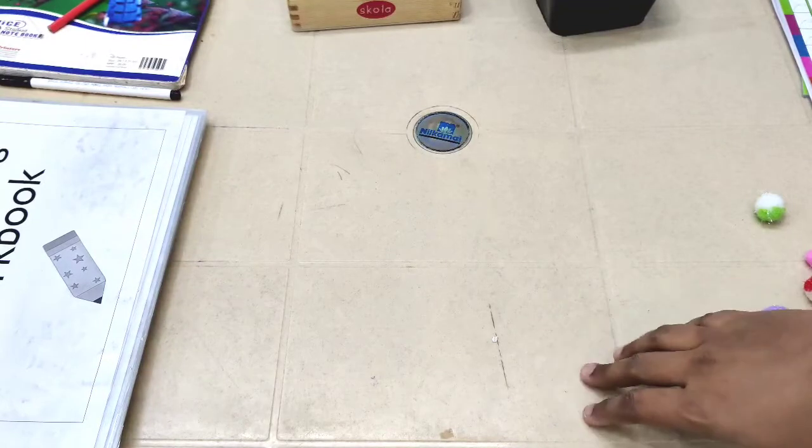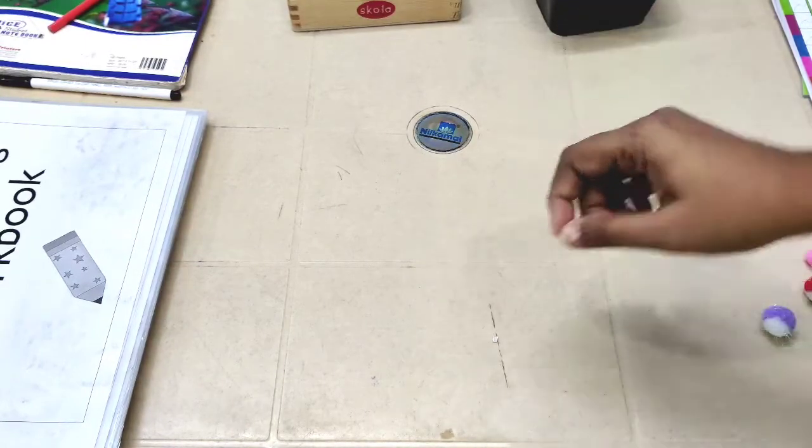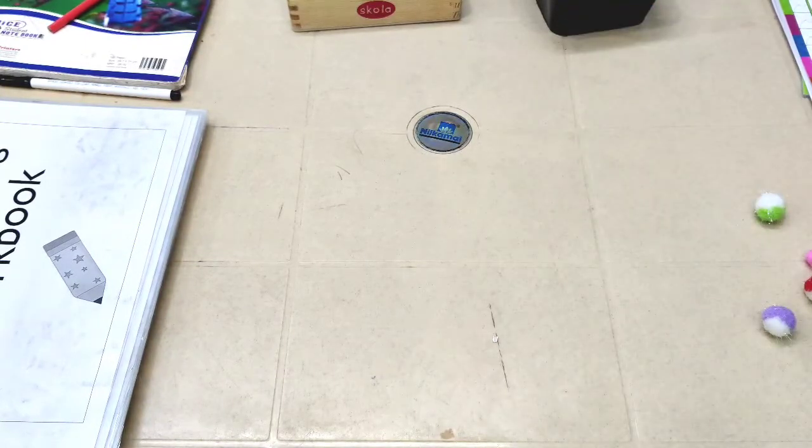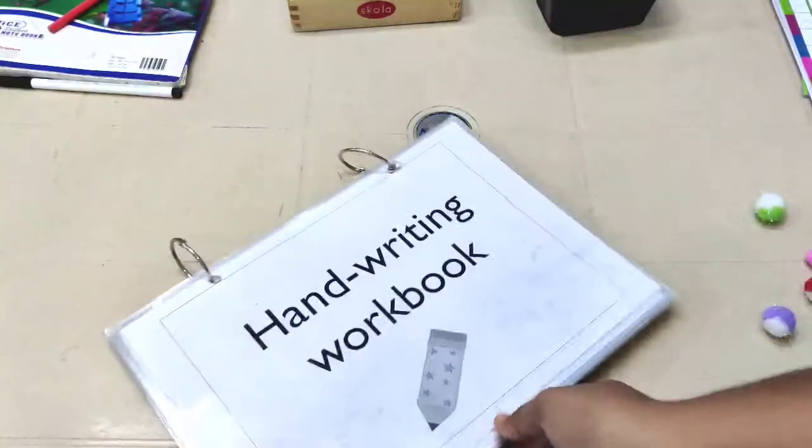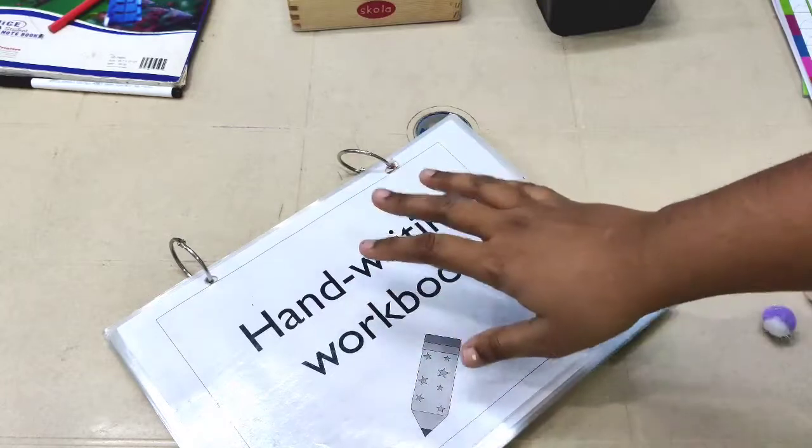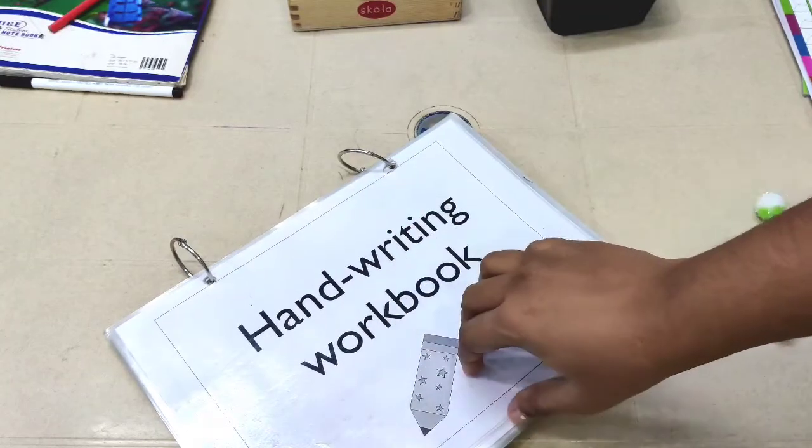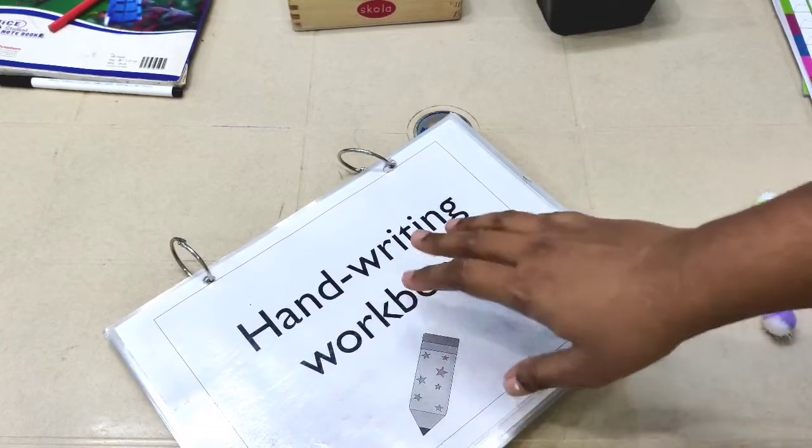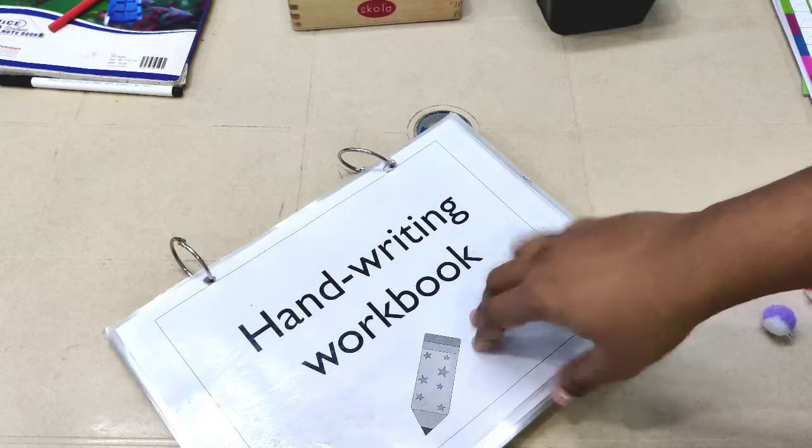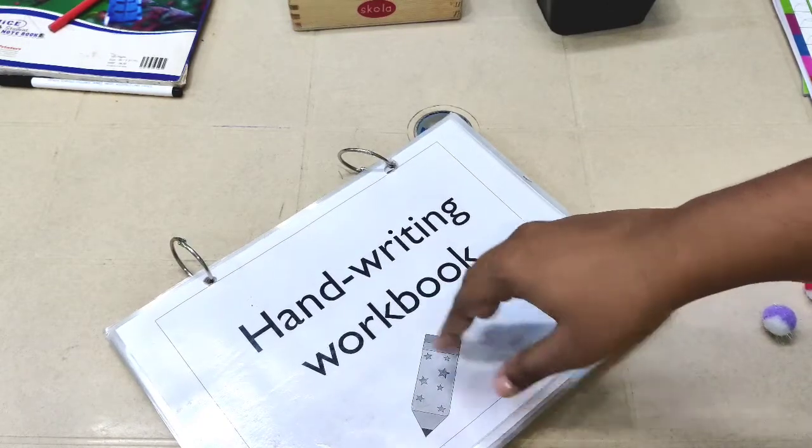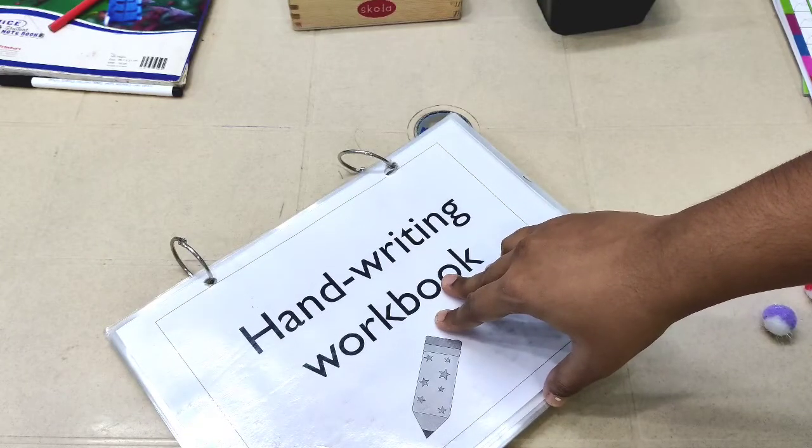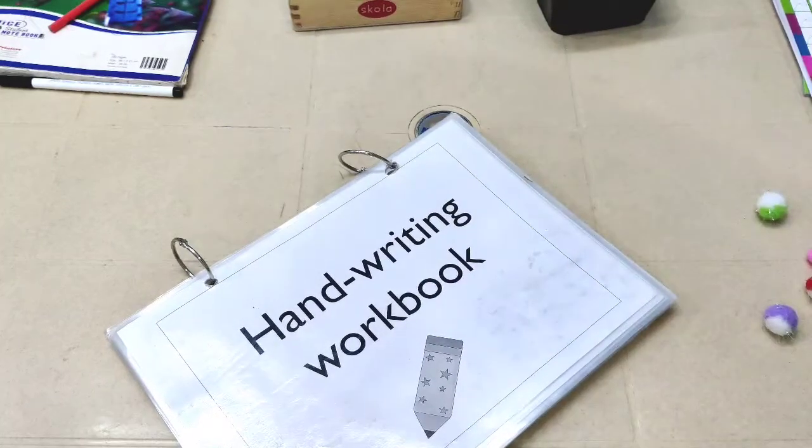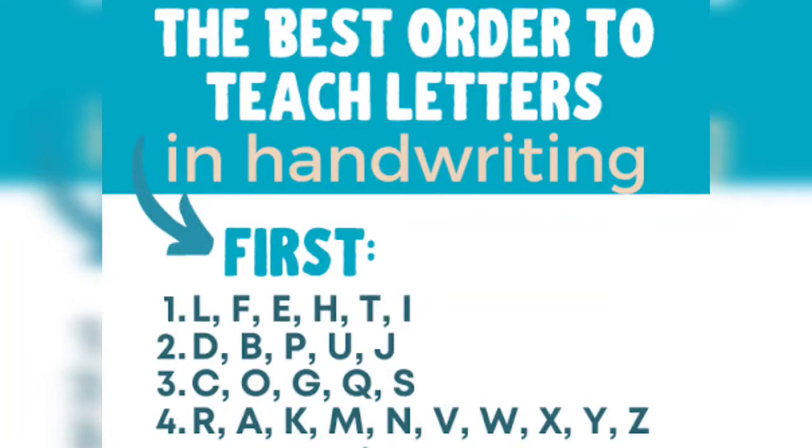Once they develop good pencil control, you can go ahead with the alphabets. Now you don't want to start with the letter A. There is an order in which you can teach letters. The best order is to start with capital letters because they are easier to write, then move on to the small letters.